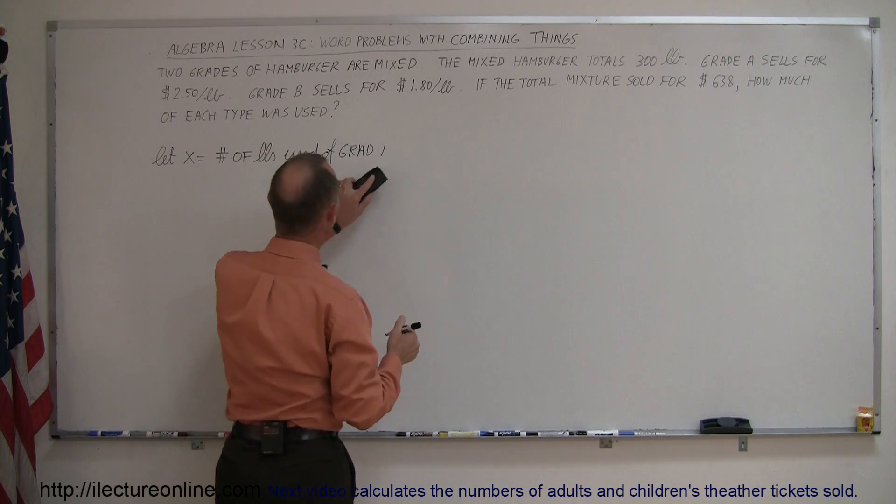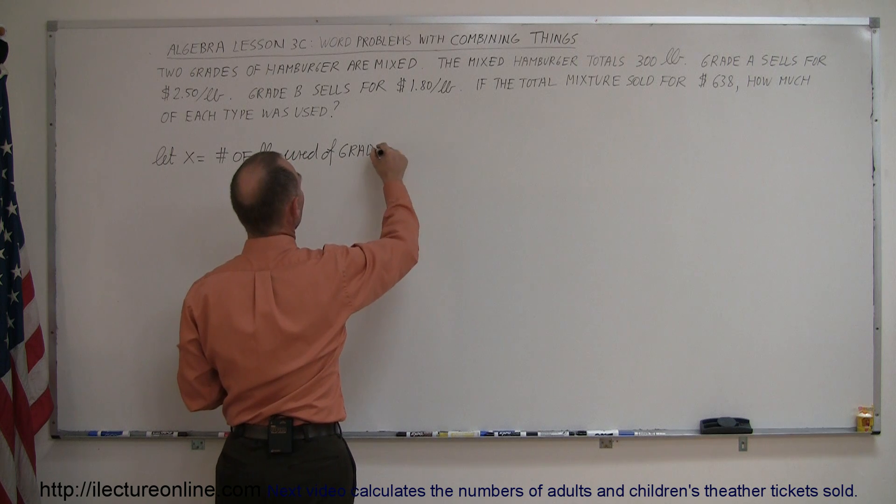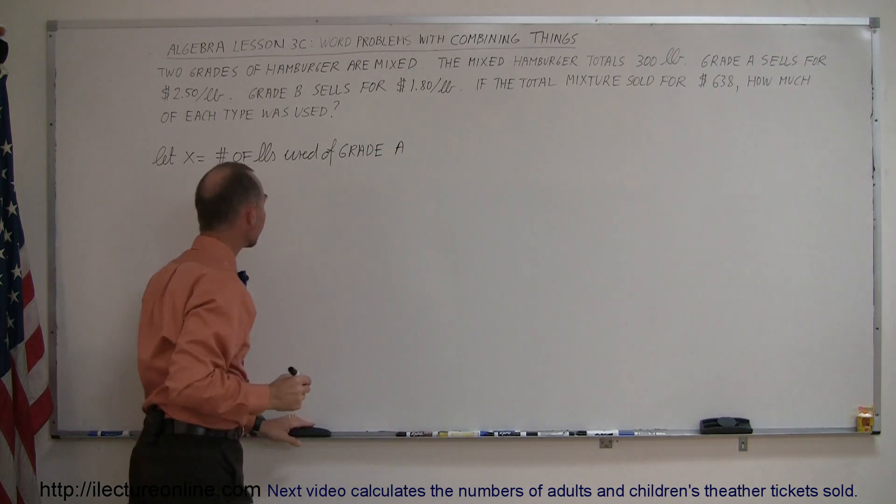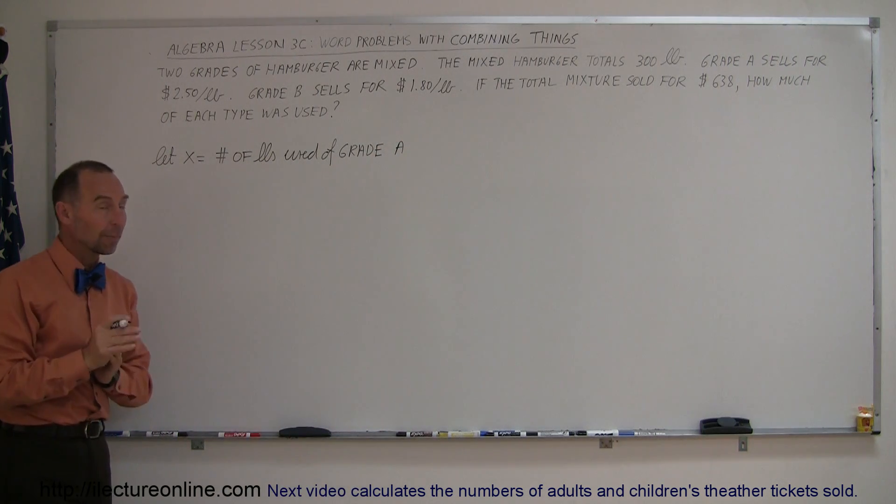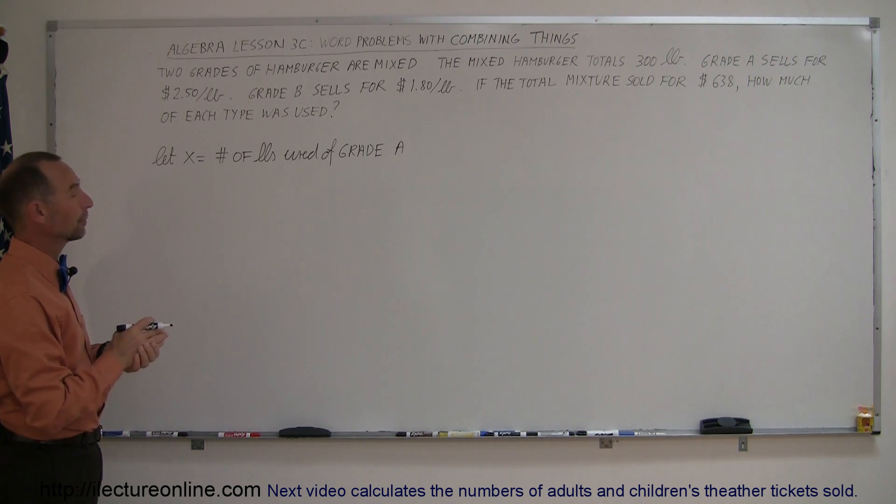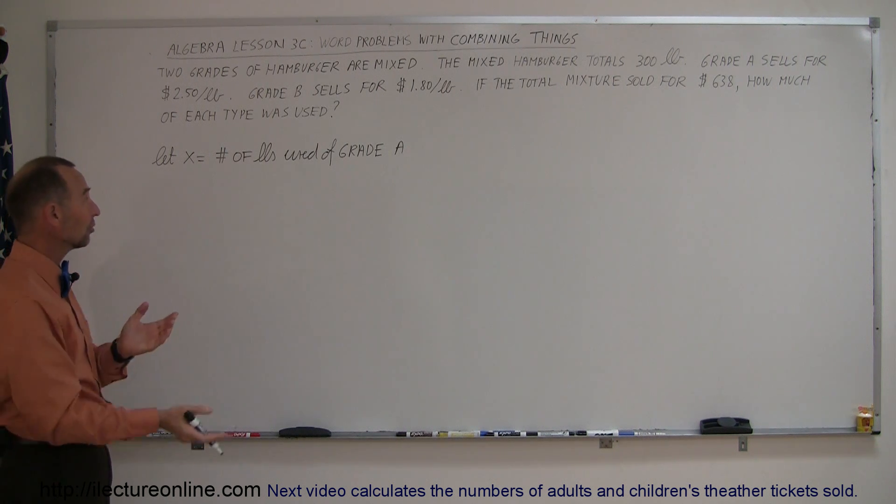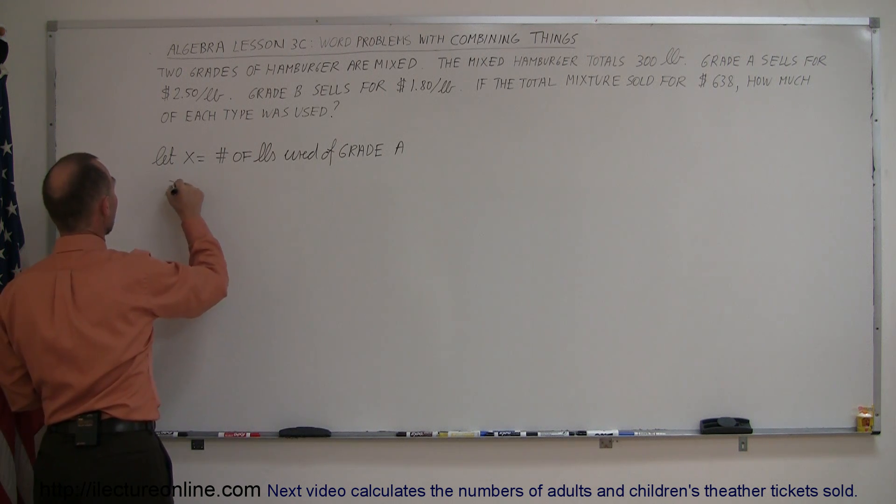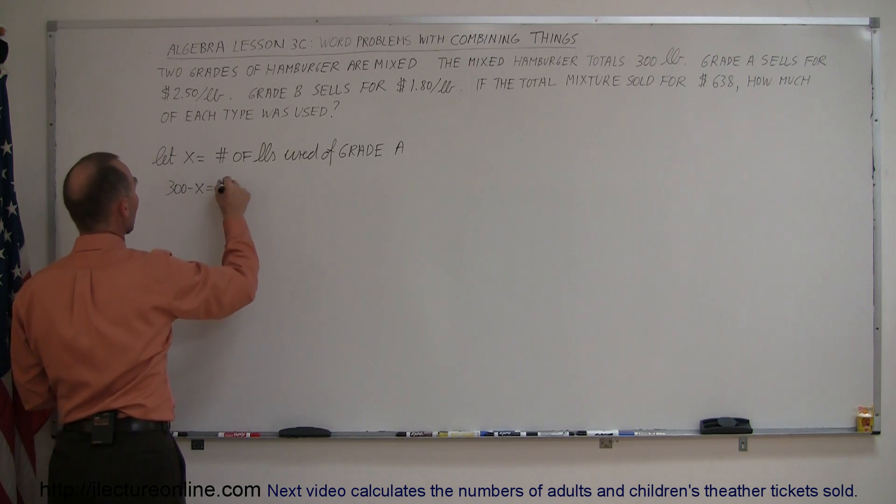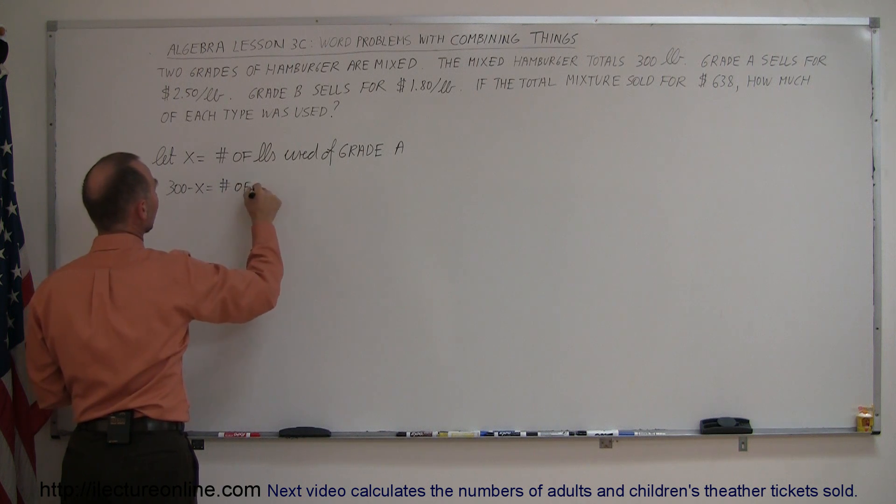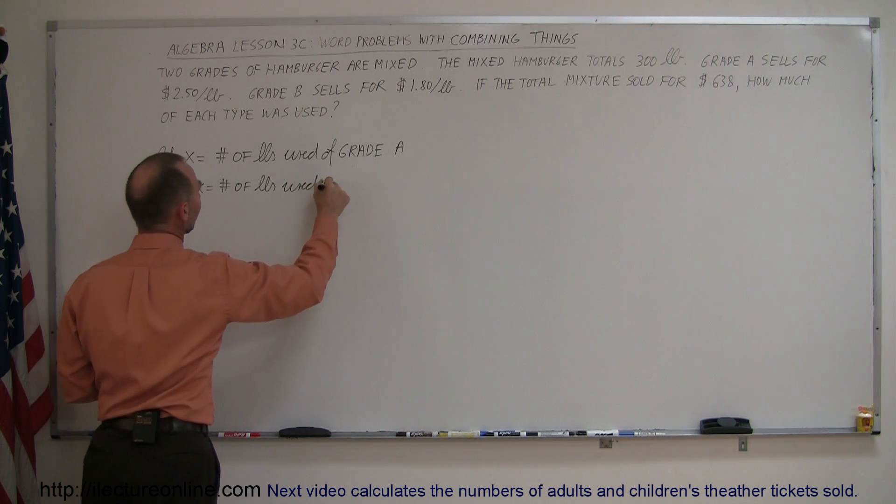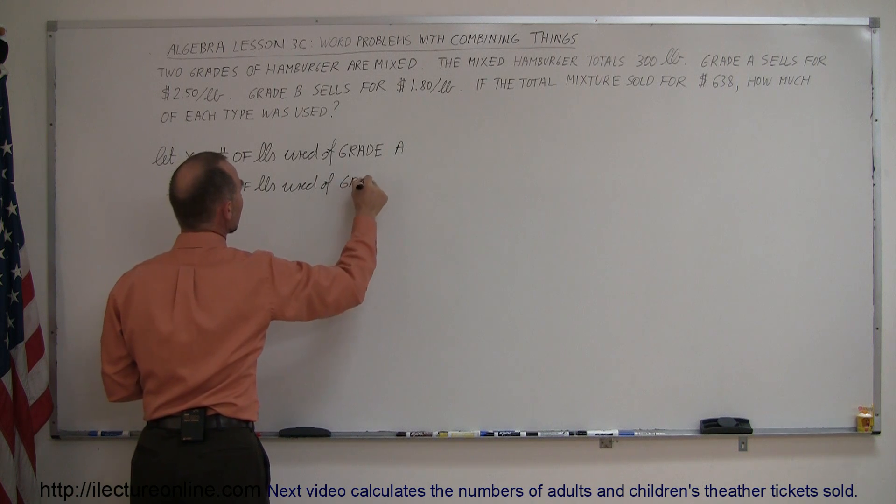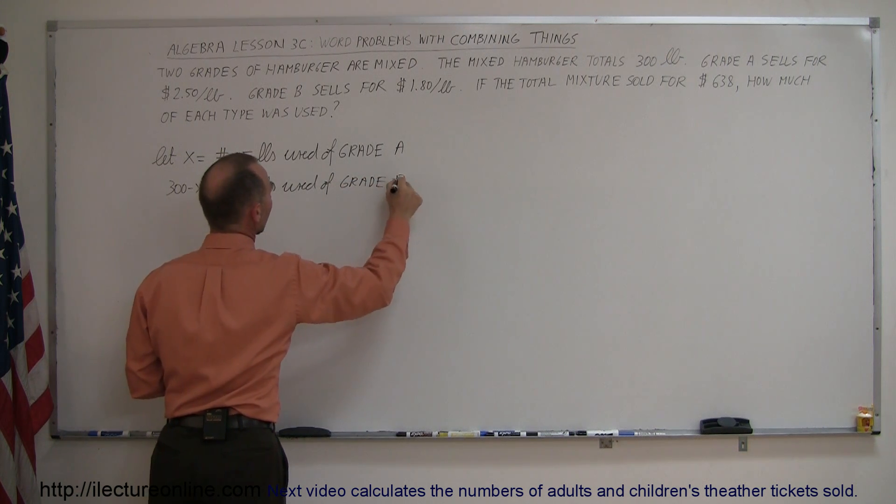So X represents the number of pounds used of grade A hamburger. Then how do we express the amount of pounds used for grade B hamburger? Well, if the total is 300, and we used X for grade A, then 300 minus X is the amount for grade B. So 300 minus X is the number of pounds used of grade B.